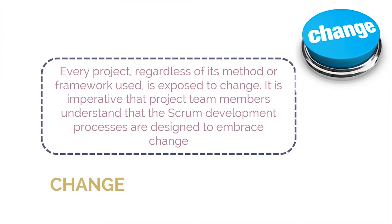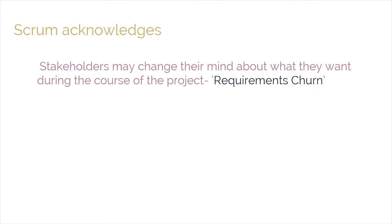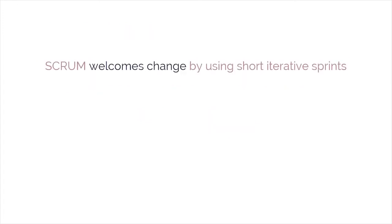The next aspect is change — another very important aspect of Scrum. Every project, regardless of its method or framework, is exposed to change. It is imperative that project team members understand that the Scrum development processes are designed to embrace change. Organizations should try to maximize the benefits that arise from change and minimize any negative impacts through diligent change management processes in accordance with Scrum principles. A primary principle of Scrum acknowledges: first, that stakeholders — customers, users, and sponsors — change their minds about what they want throughout a project, sometimes referred to as requirements churn; and second, that it is very difficult for stakeholders to define all requirements during project initiation. Scrum projects welcome change by using short, iterative sprints that incorporate customer feedback on each sprint's deliverables.